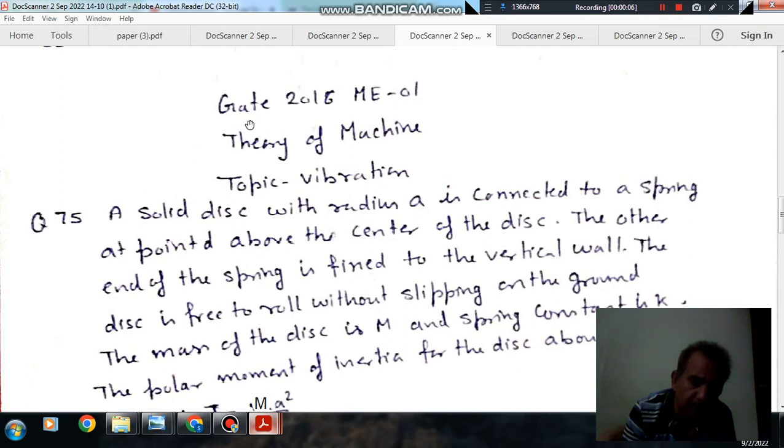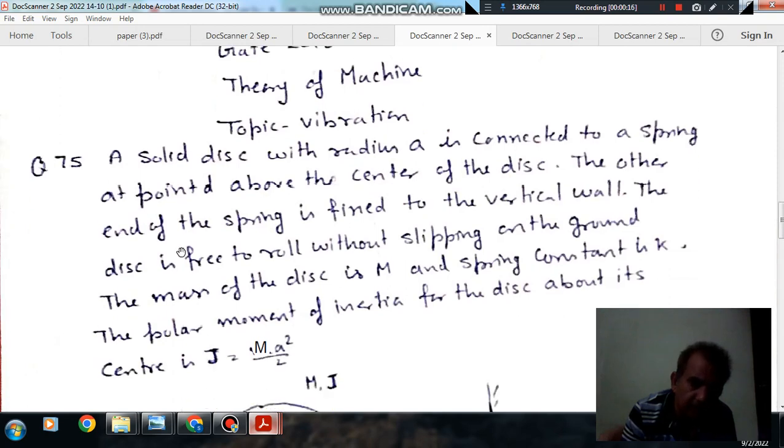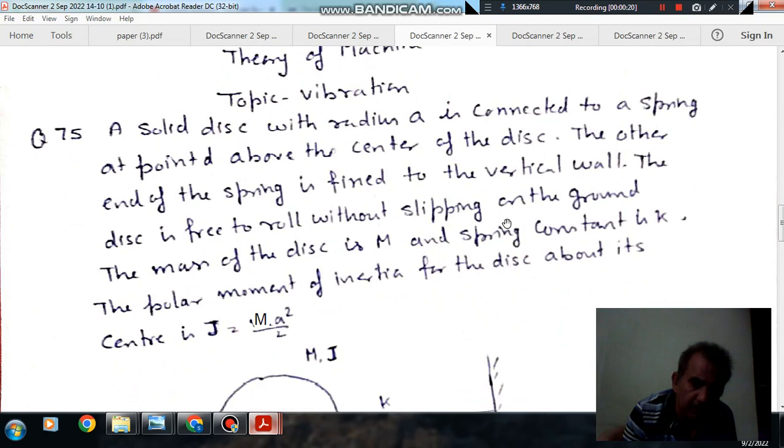The topic is vibration, question number 75 from GATE 2016 ME01. A solid disk with radius A is connected to a spring at point D above the center of the disk. The other end of the spring is fixed with a vertical wall. The disk is free to roll without slipping on the ground.